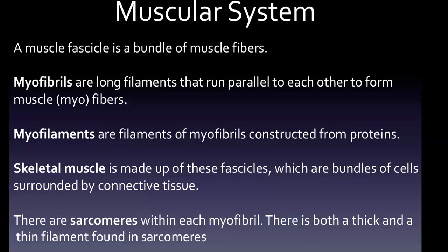Myofilaments are filaments of myofibrils constructed from proteins. Skeletal muscle is made up of fascicles, which are bundles of cells surrounded by connective tissue. Within each myofibril there are sarcomeres — a sarcomere is the basic unit of striated muscle tissue.